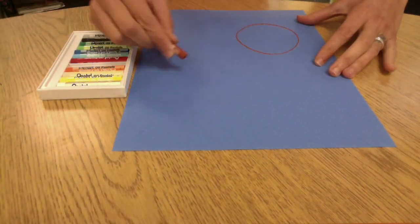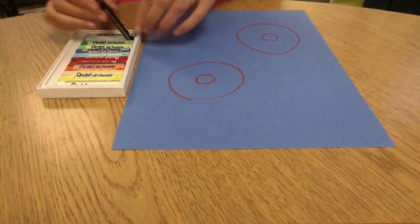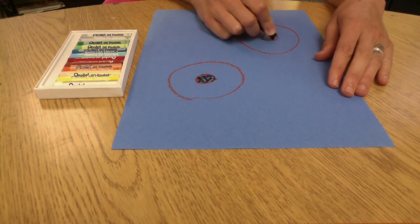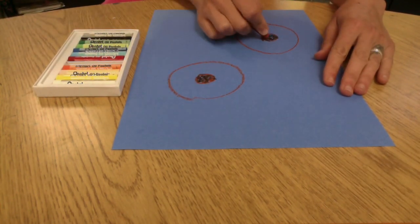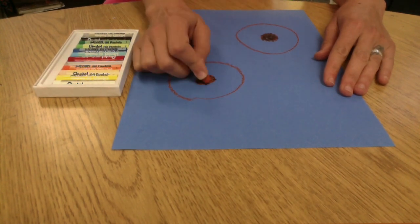Today we're going to draw sunflowers inspired by the artist Vincent Van Gogh. We're going to use oil pastels, even though Vincent Van Gogh used oil paints, but we can achieve a similar effect with our oil pastels.